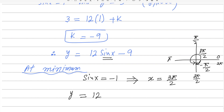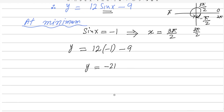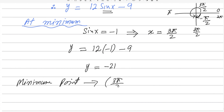So y equals 12 times minus 1 minus 9, which gives y equals negative 21. This is the minimum point: coordinates (3π/2, −21). The second part of this question is done.